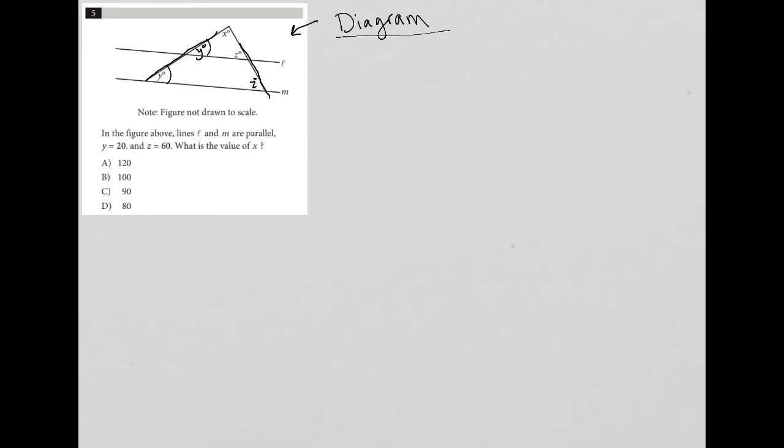These angles are formed by the same transversal and parallel lines, same thing on this side. So the question tells us that Y is equal to 20, so that means this is 20 here, but so is that angle there. Z is 60, so that means this is 60 here, but so is that there.